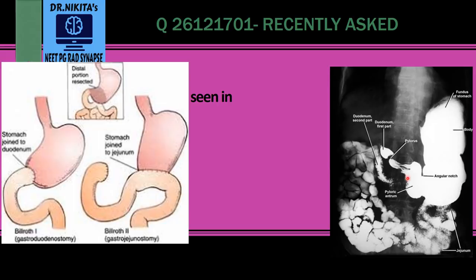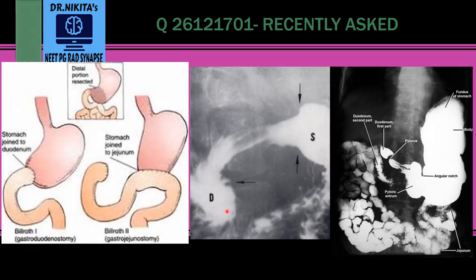You have the stomach and the duodenum, and it seems like they are connected together like a gastroduodenostomy — that is Billroth-1. That is why we see Pseudo-Billroth-1: an appearance like Billroth-1 in the absence of a history of surgery.